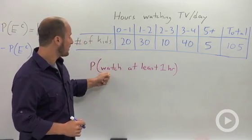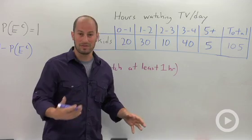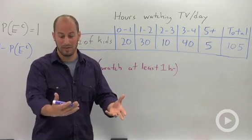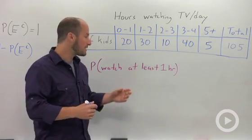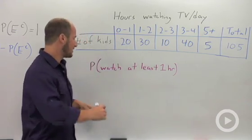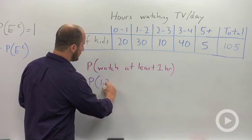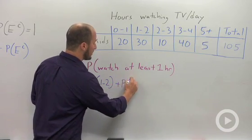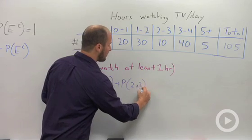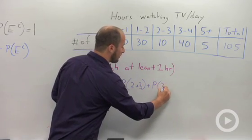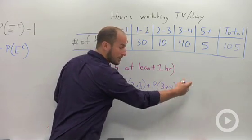We're looking for the probability that you watch at least one hour of TV of someone just chosen at random. If we're seeing at least, what that would have to be is the probability that they watch one to two, plus the probability they watch two to three, plus the probability they watch three to four, and so on and so forth.